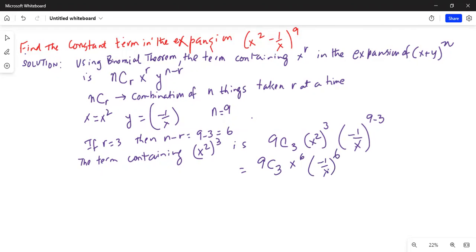Notice the exponent for -1/x is 6, which is an even power. So therefore this is equal to 9C3 · x⁶ · 1/x⁶. The minus sign disappears because of the even power. So x⁶ and x⁶ cancel, so the constant term then becomes equal to 9C3.